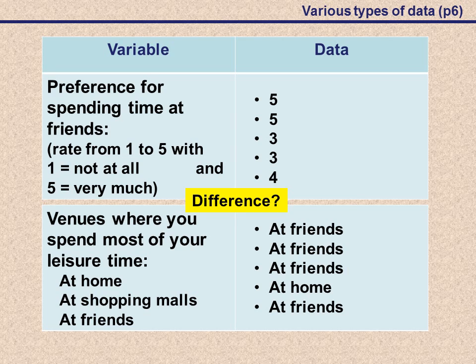The difference between these two: if we look at the first one again, like we said, there's a rating system going on here. There is an objective way of ranking that is happening over here. 1 is not at all, 5 is very much. So there's a rating scale that's happening. The rank of this data is actually meaningful.